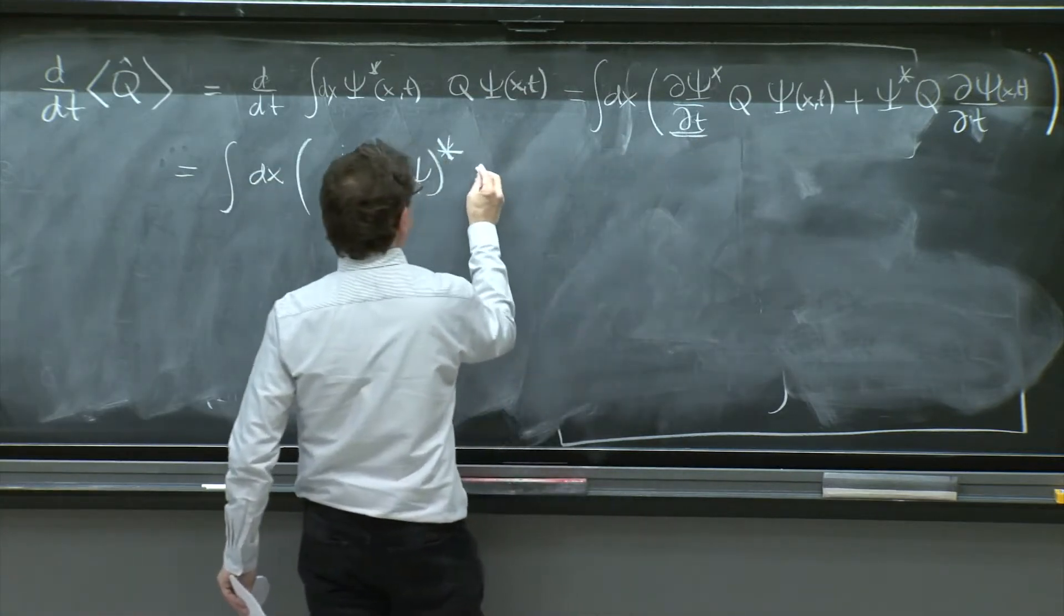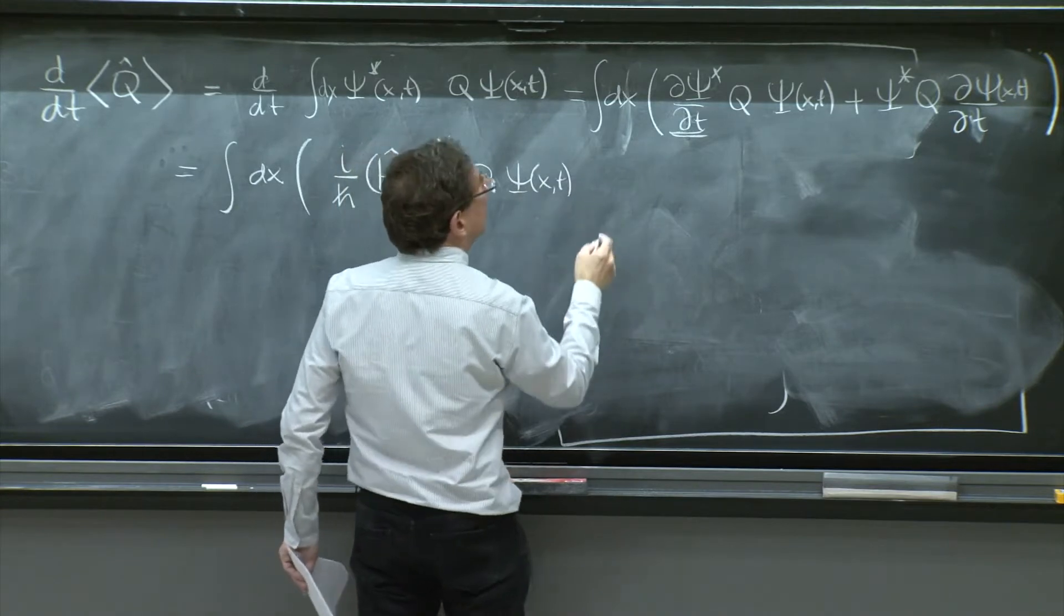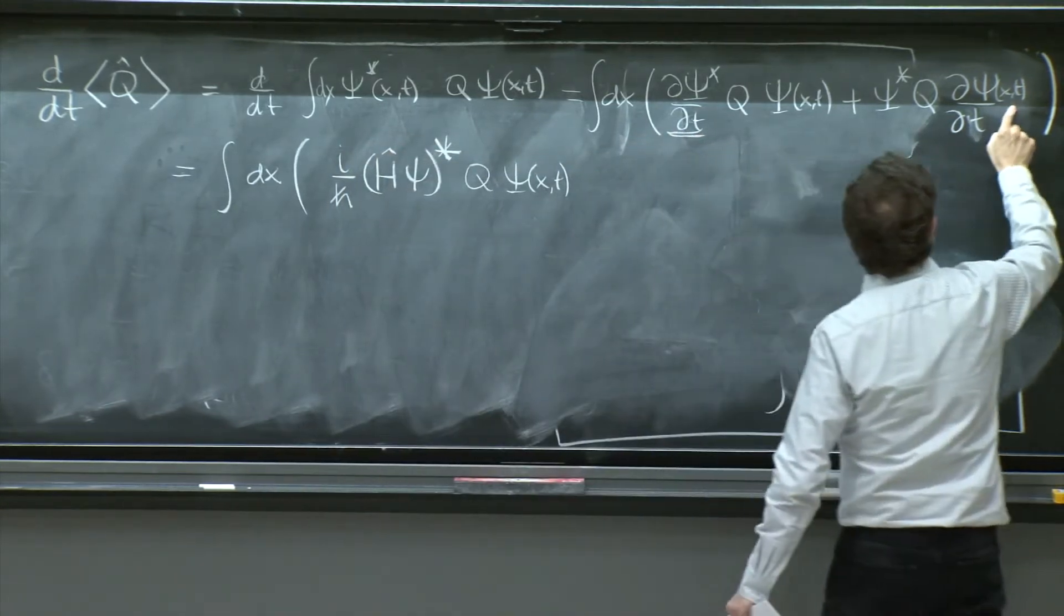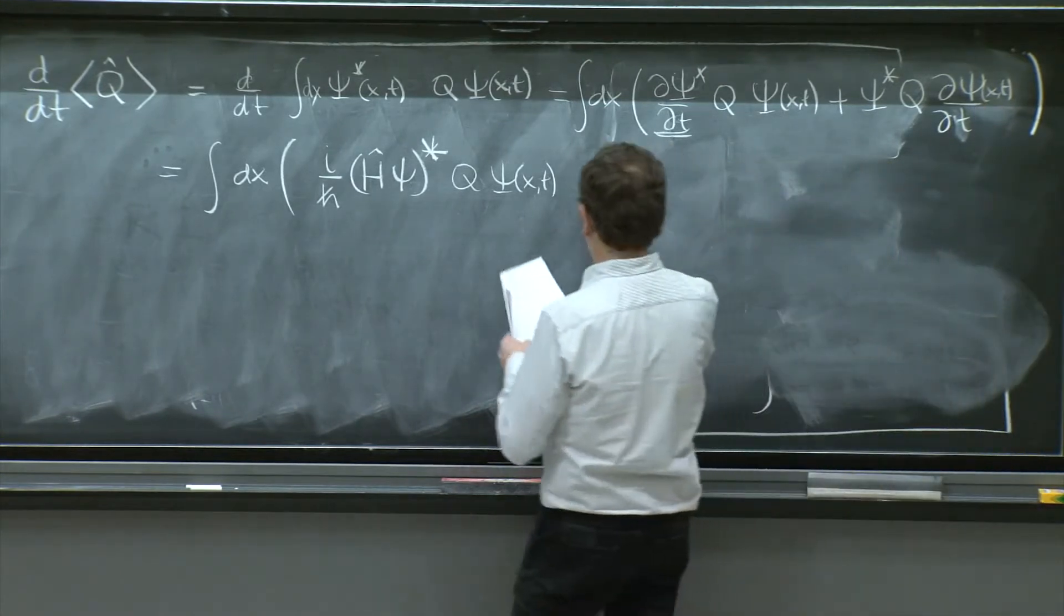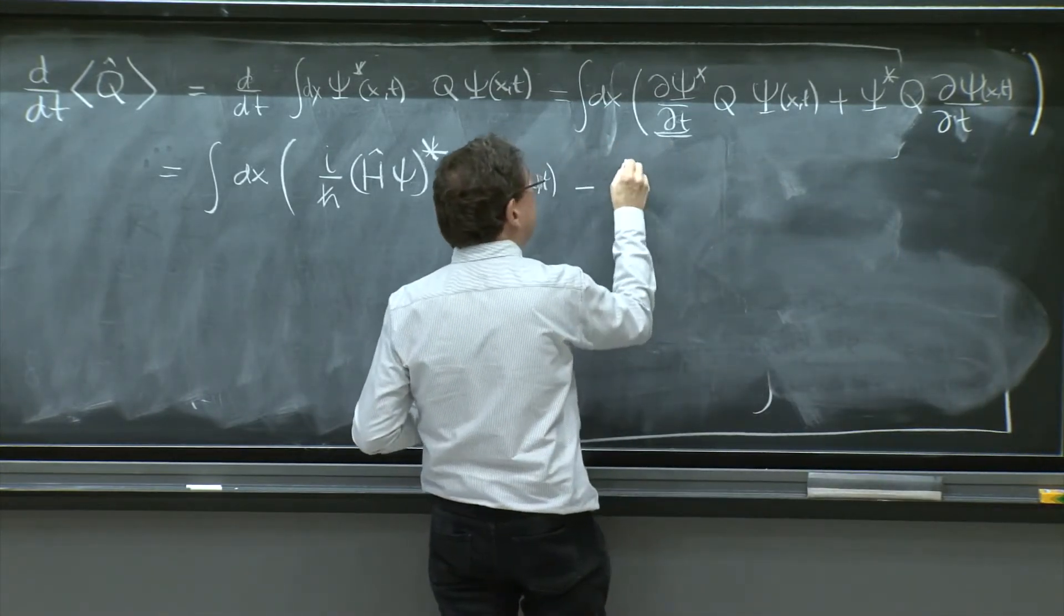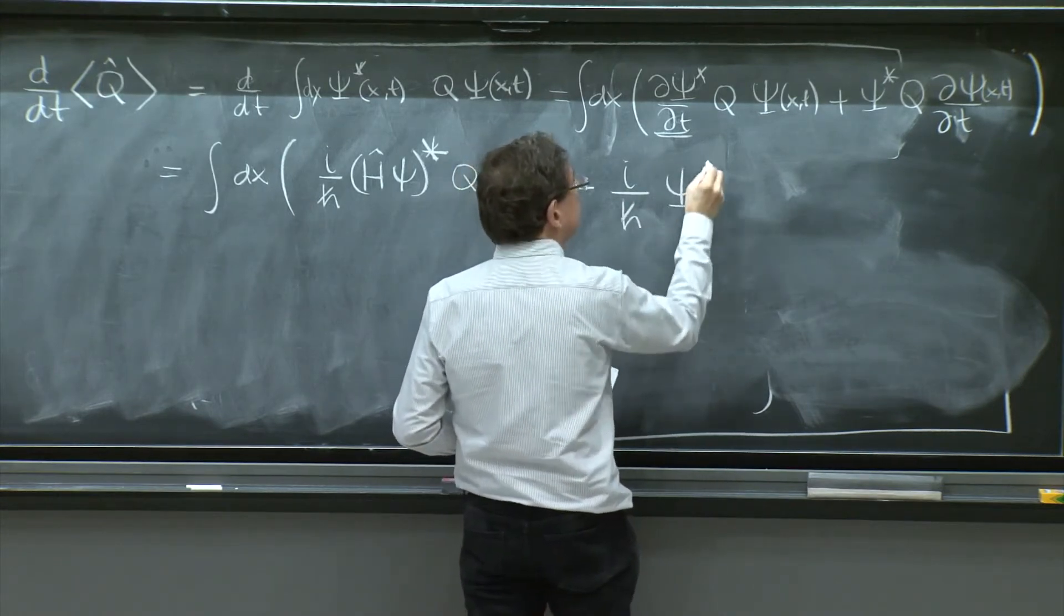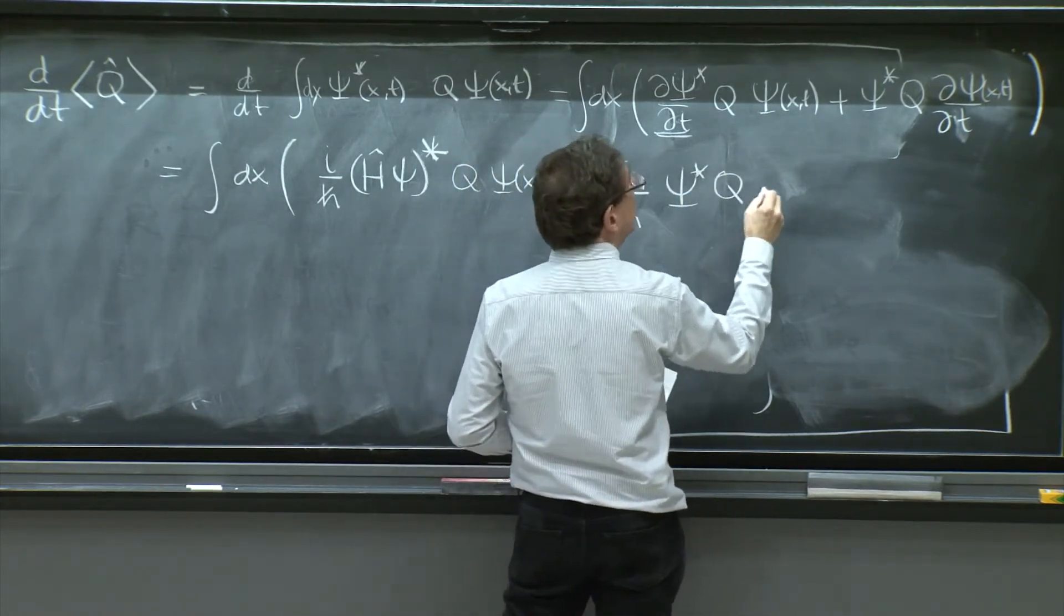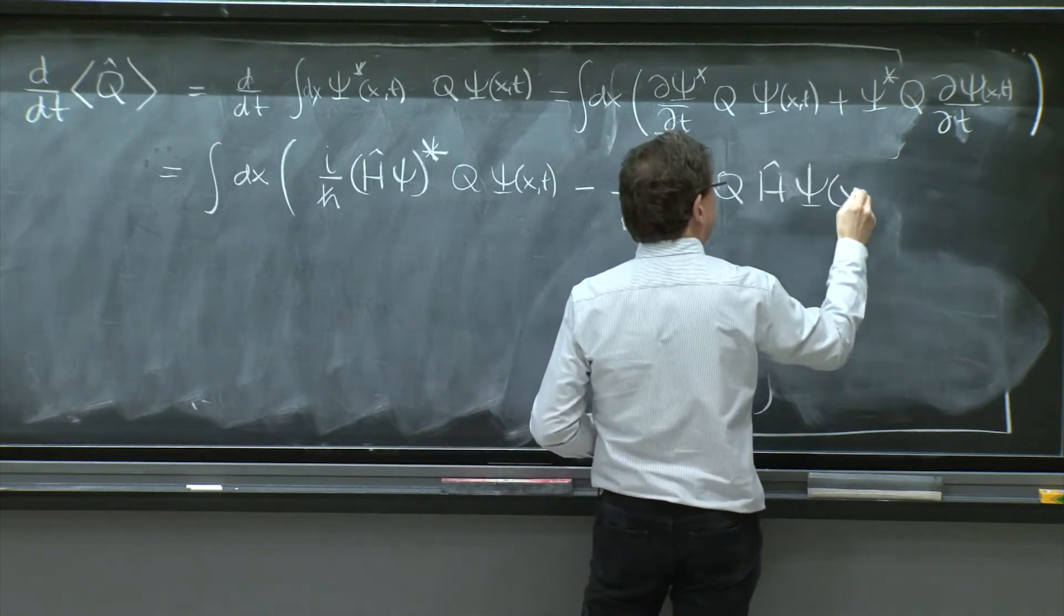Then you have the q psi of x and t. On this term, you will have a very similar thing. Minus i over h bar this time, psi star q h psi of x and t.